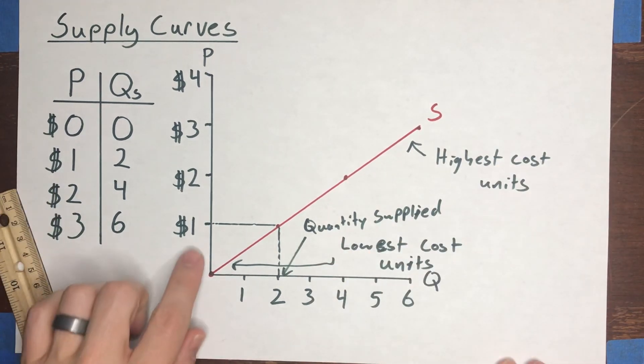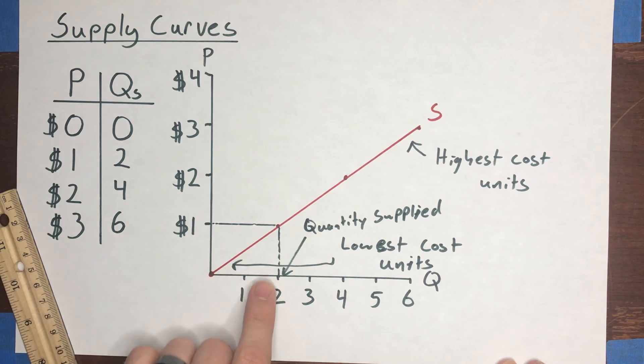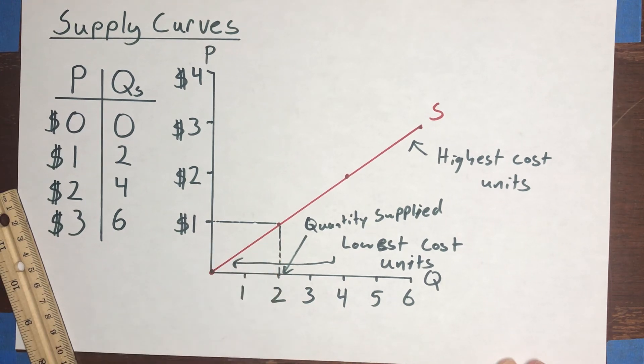At that price. So at a price of $1, presumably there are two units that are being offered for sale.